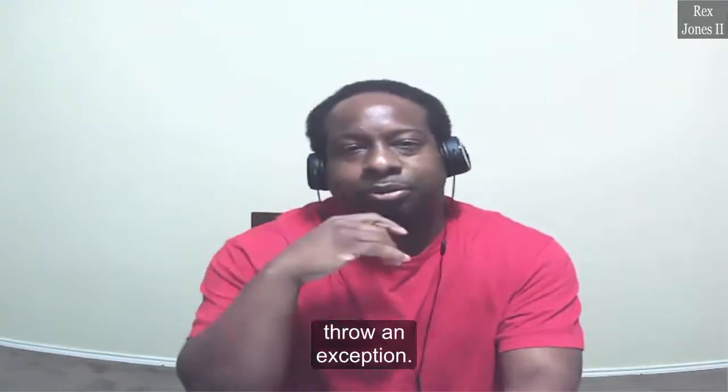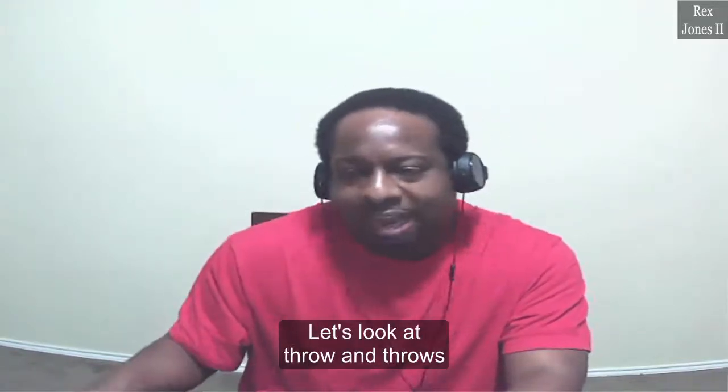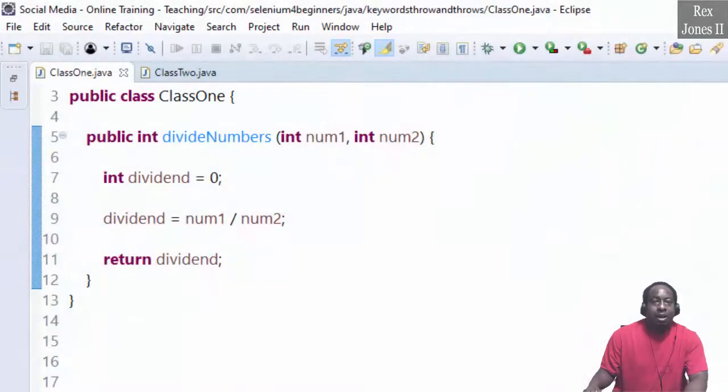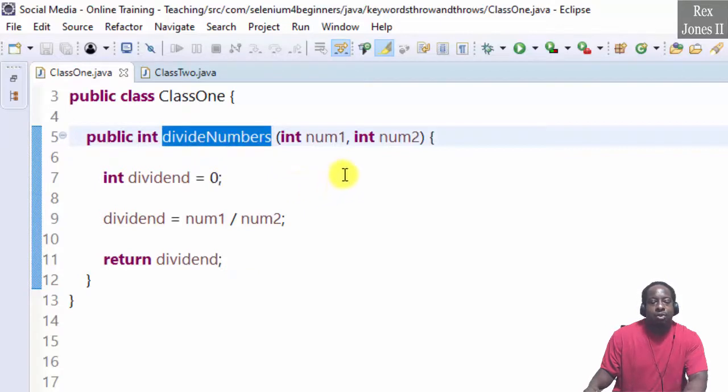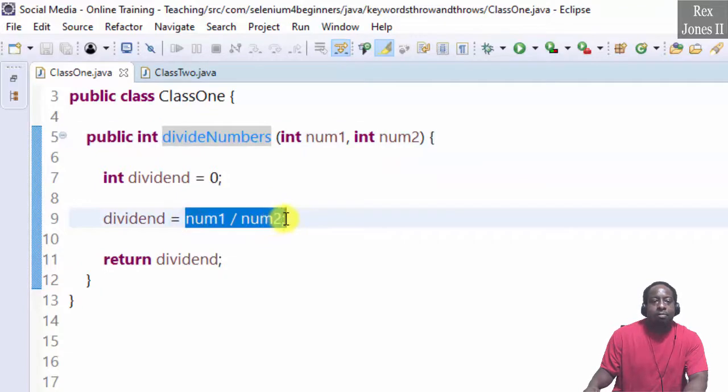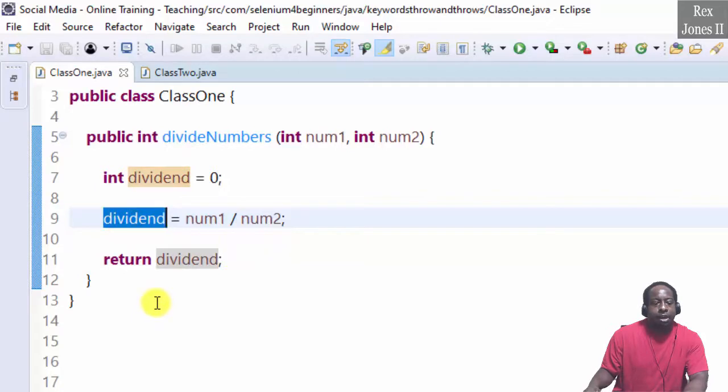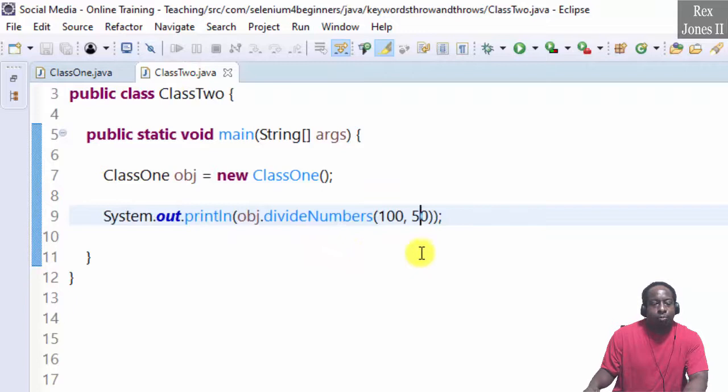Under Class One, I have a method called divideNumbers that receives two integer arguments, num1 and num2. Num1 is divided by num2 and the value is assigned to dividend. Dividend is returned to the calling method.